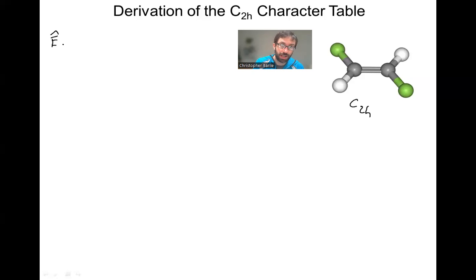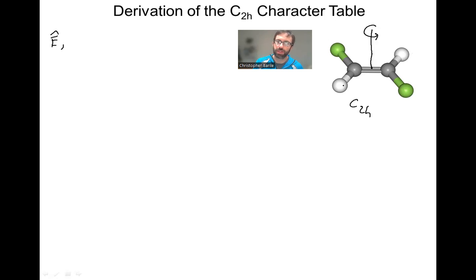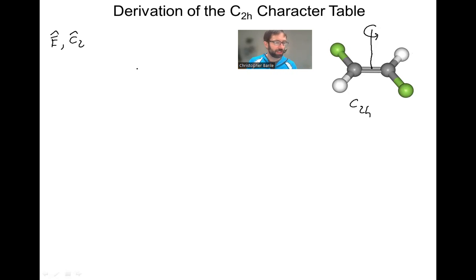We're always going to have the identity operation — that's just doing nothing to the molecule. What other operations do we have? Well, C2 tells us — the name of the point group tells us we have a C2. The C2 in this case goes right down the center of this molecule. It's a 180-degree rotation — 360 degrees divided by N. It's going to take this green fluorine atom and put it into this green fluorine atom, this white hydrogen atom and put it into this white hydrogen atom, and that's also going to interconvert the carbons. So we have a C2. Doing C2 twice is the same as identity, so that's not a unique operation.